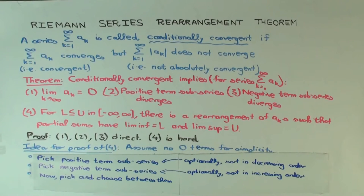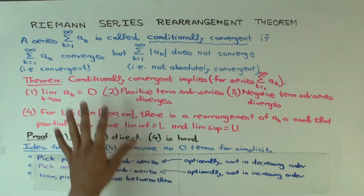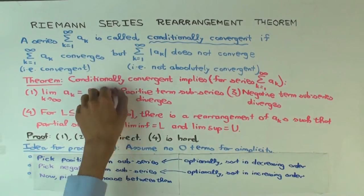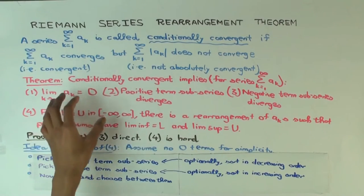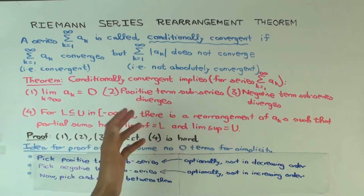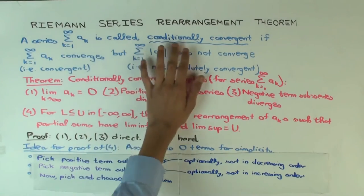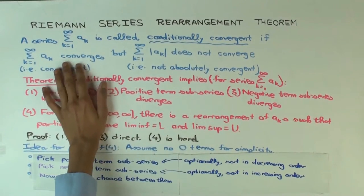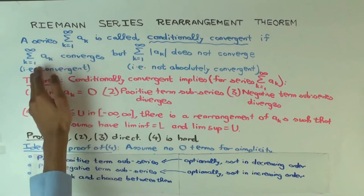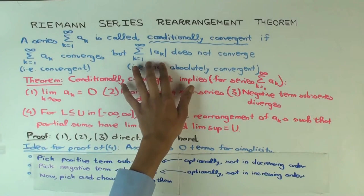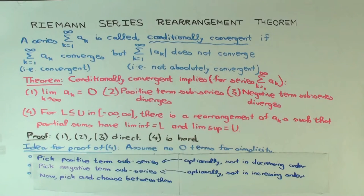This talk is about the proof of the Riemann series rearrangement theorem. There's a previous talk where we covered the statement of the theorem. I'll just remind you of the trickiest part: a series is called conditionally convergent if the sequence of partial sums converges, but the sequence of partial sums of absolute values doesn't converge — so it's not absolutely convergent.